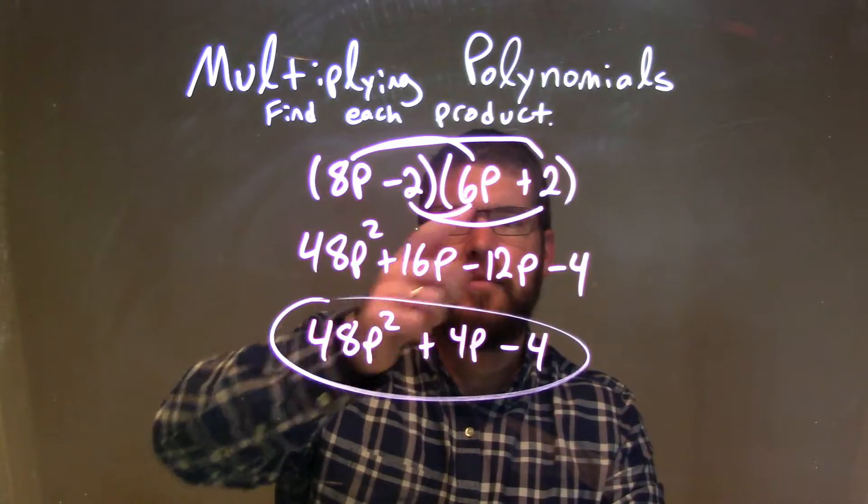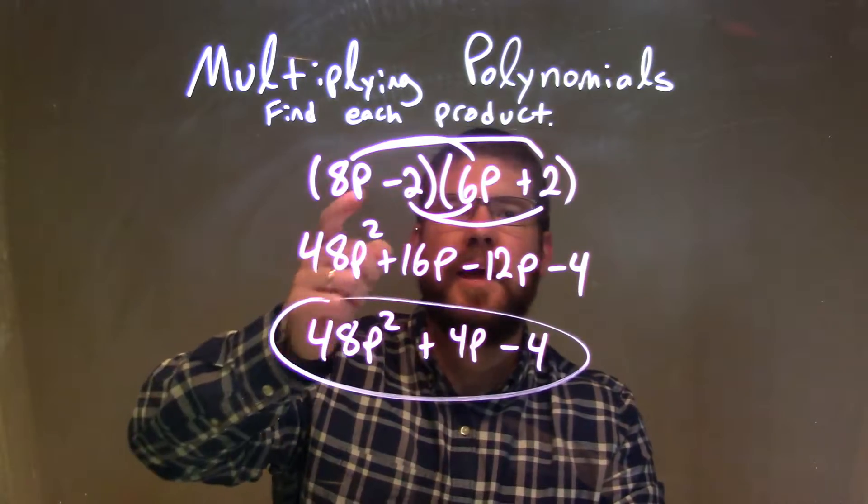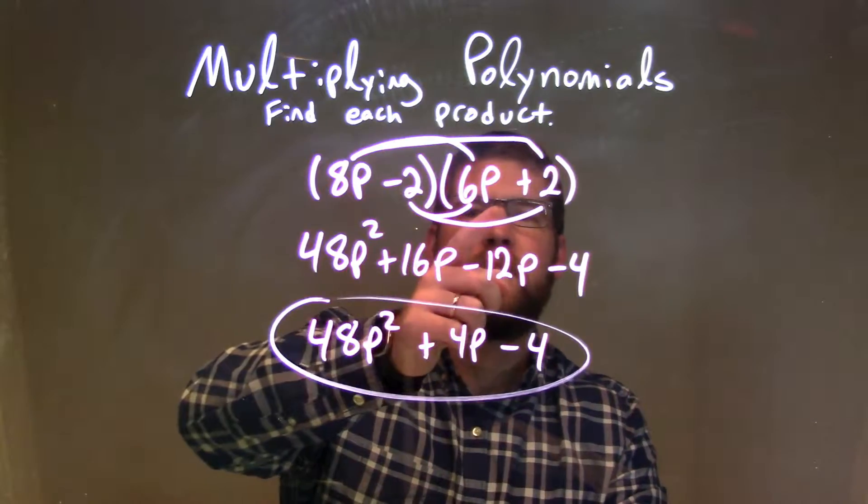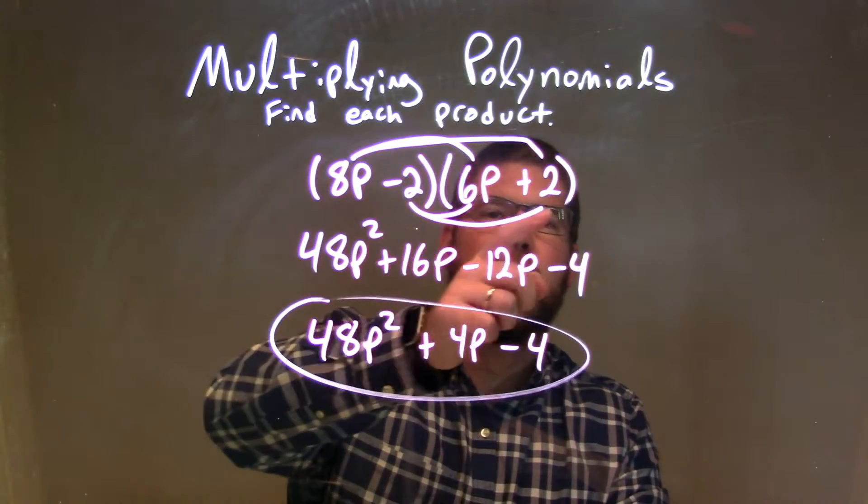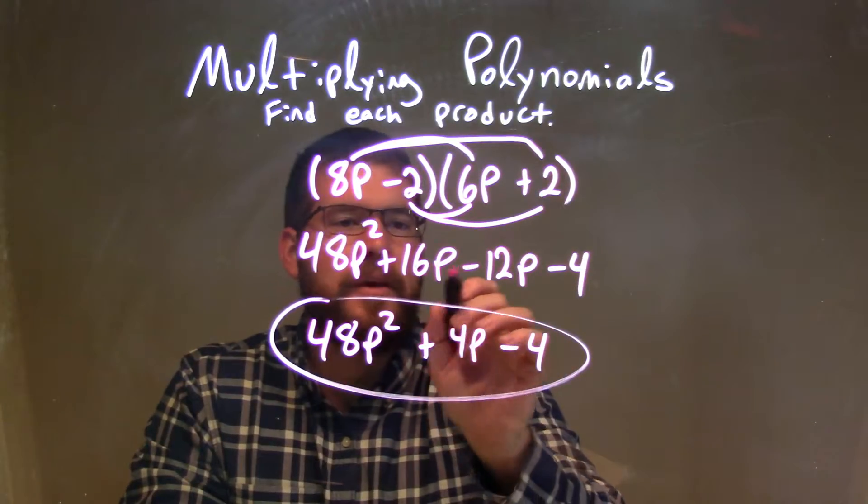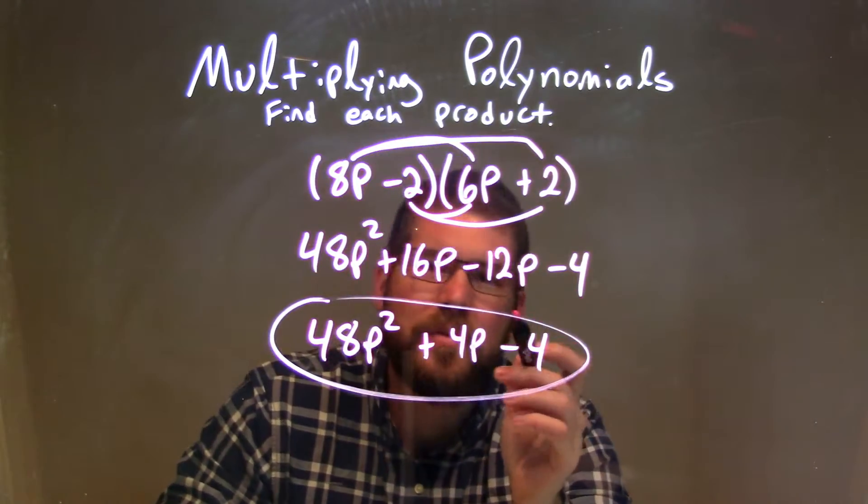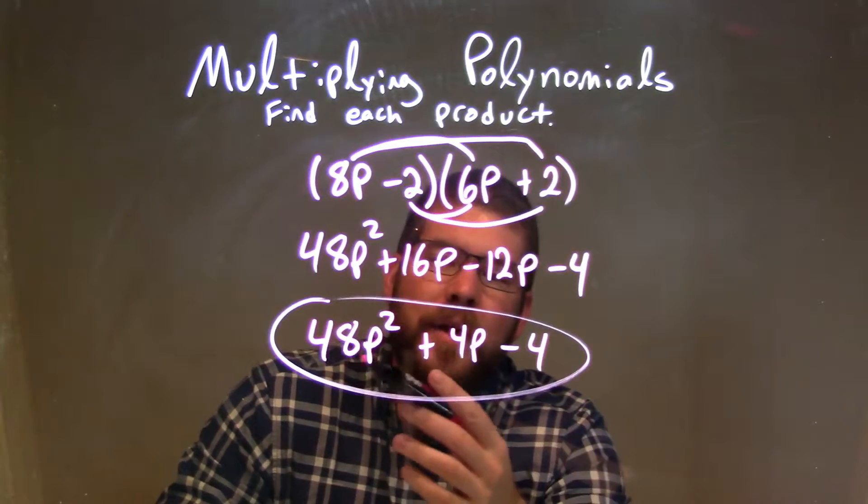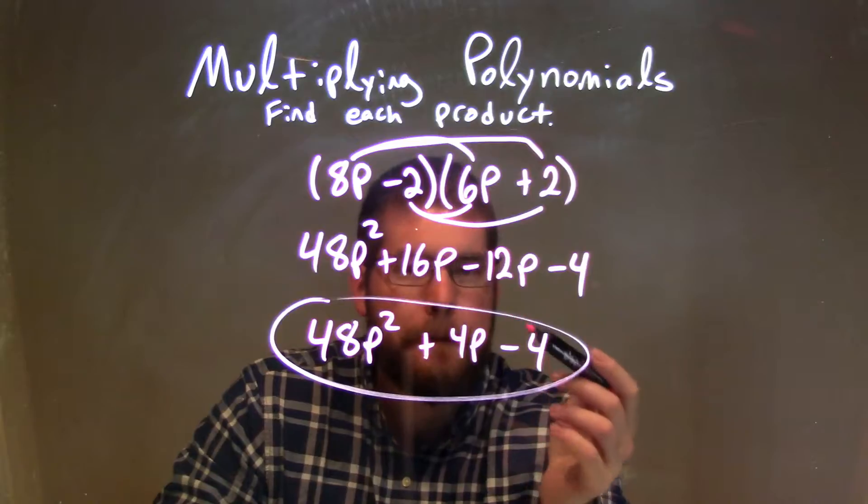As I went, 8p times 6p was 48p squared. 8p times 2 is 16p. Minus 2 times 6p is minus 12p. And minus 2 times 2 is minus 4. We then combine our like terms here. 16p minus 12p were my only two like terms, which combine to 4p. And so my final answer here is 48p squared plus 4p minus 4.